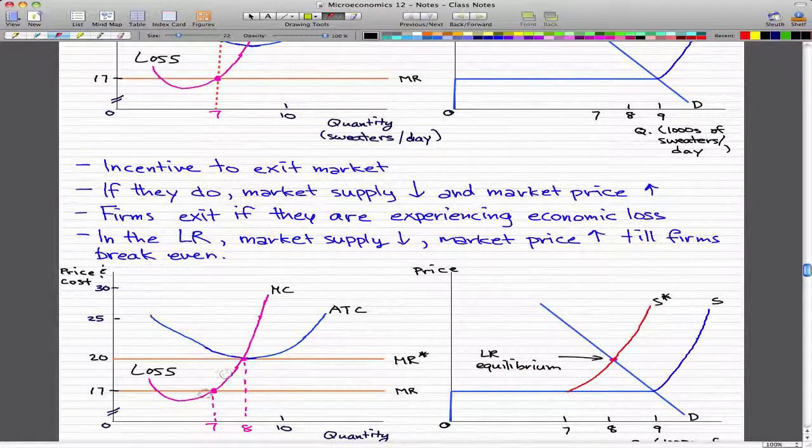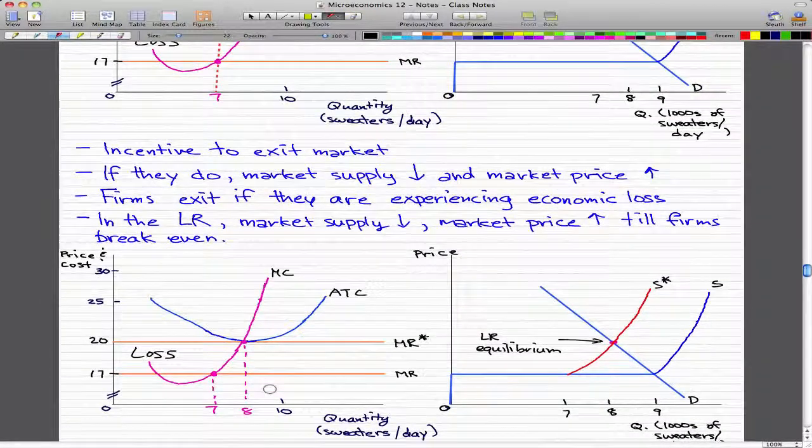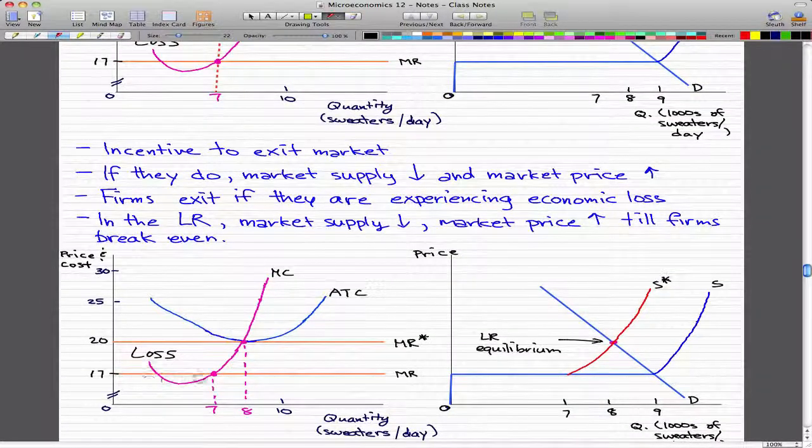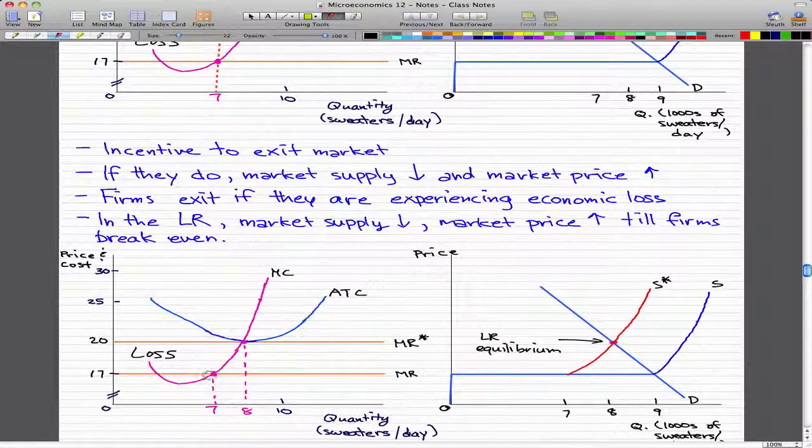So here is where we were originally at. We were making seven sweaters per day and selling them at a price of $17. Now, in that case, firms recognize the loss and some of the firms will decide to exit.